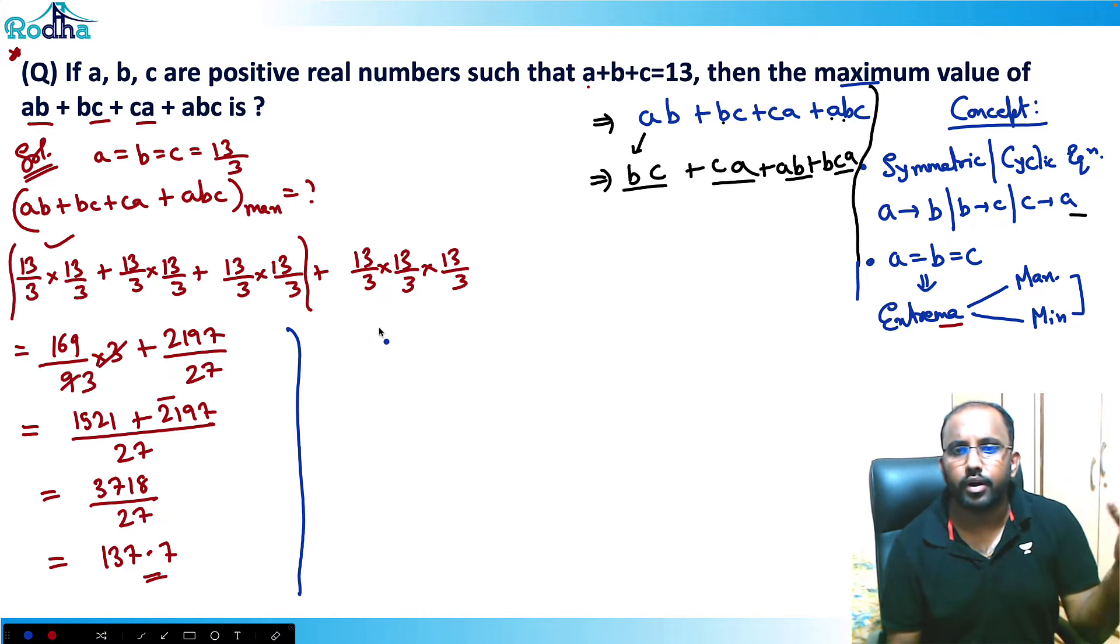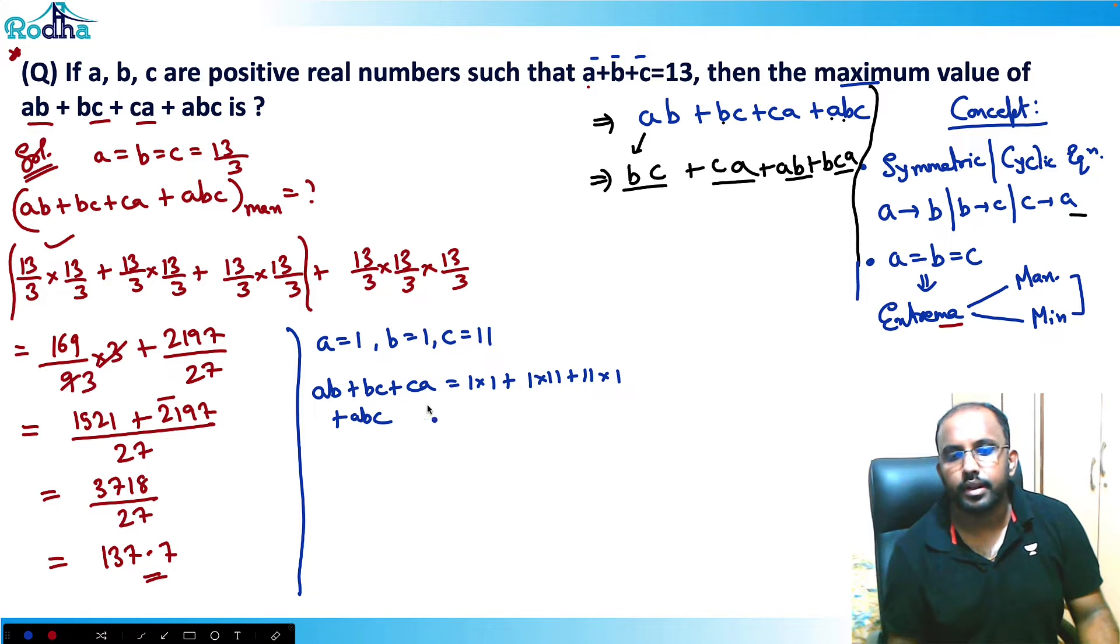For example, I've taken all to be equal to 13 by 3, I've taken all to be very close. Now let's take the numbers a bit far. Let's try to take these values: a equal to 1, b equal to 1, c equal to 11. Still a plus b plus c equals 13. Now let's check the values. If I again check this equation, ab plus bc plus ca, that is equal to 1 into 1 plus 1 into 11 plus 11 into 1 plus abc, that is 1 into 1 into 11.